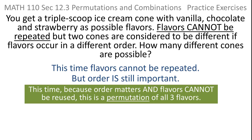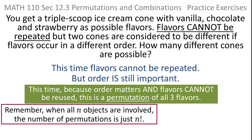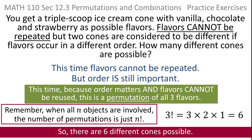So this is really a permutation — the prototypical case. These flavors might as well be people standing in line for a photo. Vanilla could be John, chocolate could be Angie, and strawberry could be Paul. Since they can't be repeated and order is important, this is a permutation. When you're taking a series of n objects and putting them all in order, the answer is n factorial. So this would be 3 factorial, which is 3 times 2 times 1, which is 6. There are 6 different cones possible if flavors cannot be repeated.